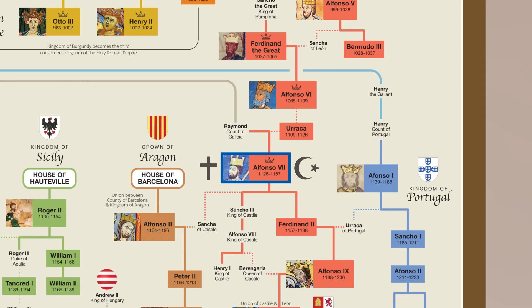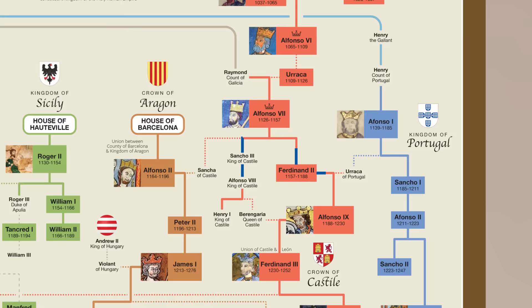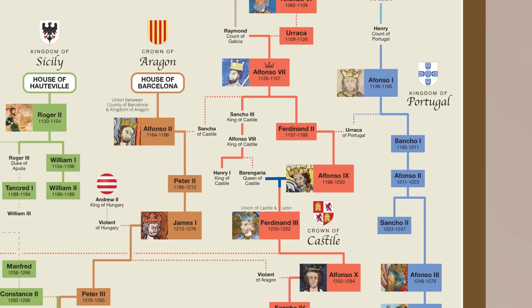During the reign of Alfonso VII, the Almoravid Empire was replaced by the Almohad Caliphate in Morocco, and during the transition of power, new lands were conquered by the Christian kingdoms at the expense of the Muslims. Upon his death, his kingdom was split into the Kingdom of Castile and the Kingdom of Leon. However, this split proved temporary, as both Castile and Leon were inherited by Ferdinand III.